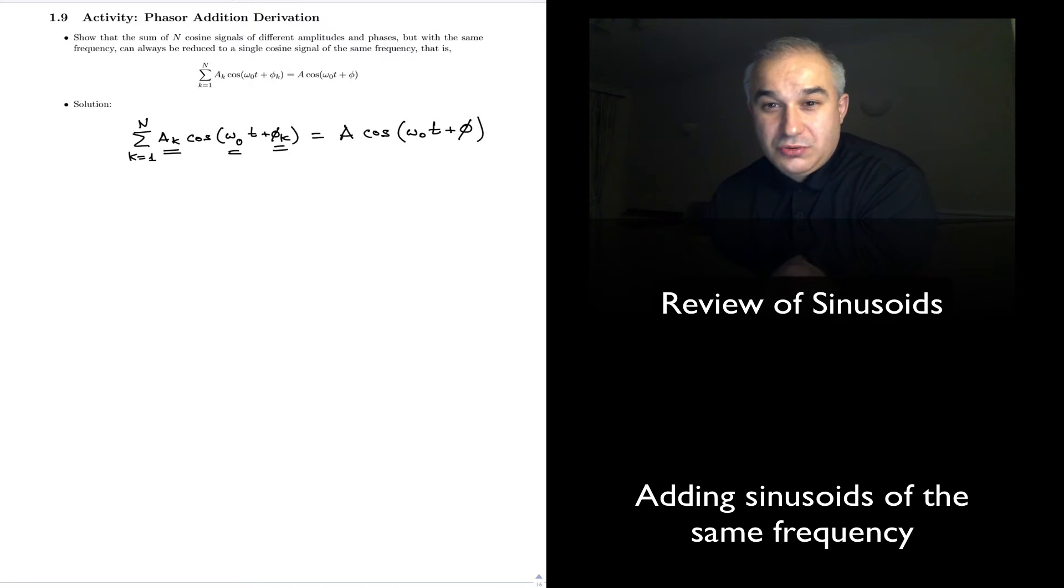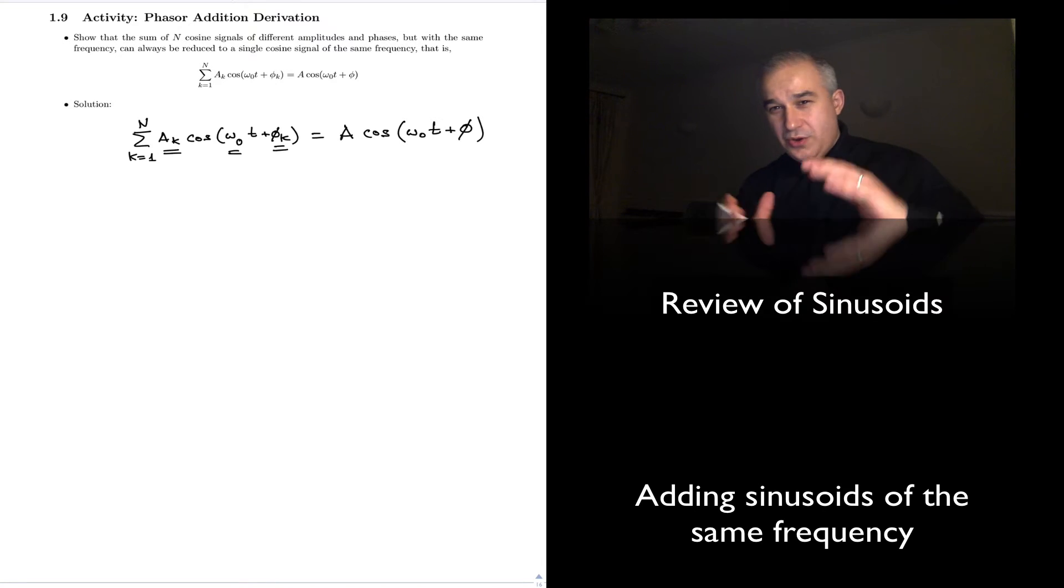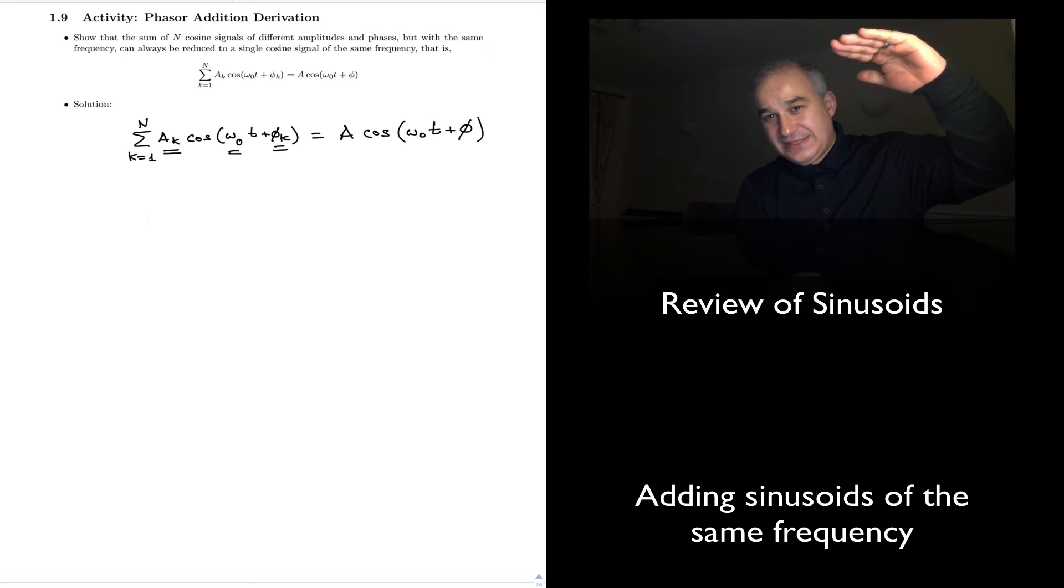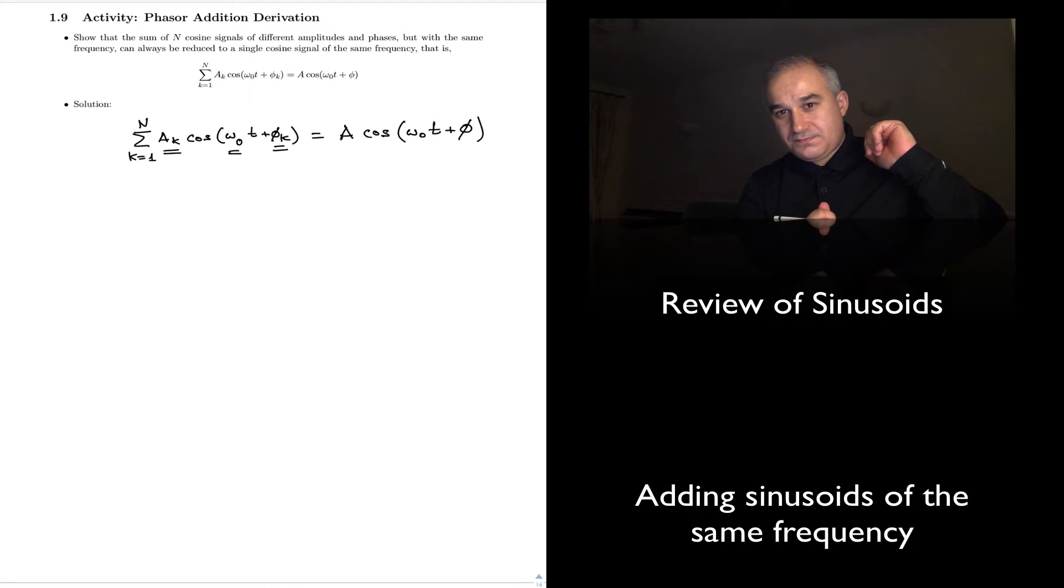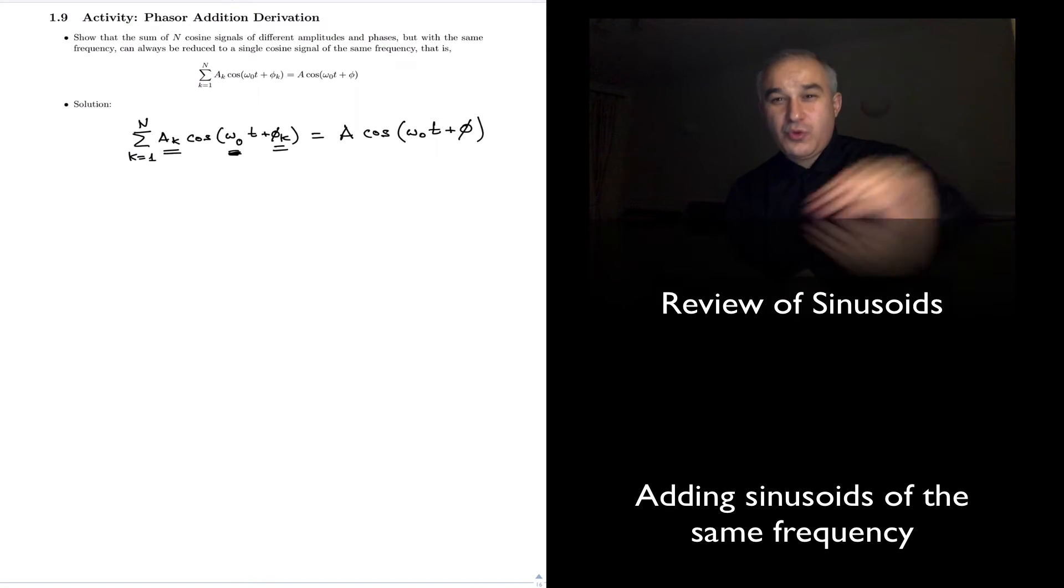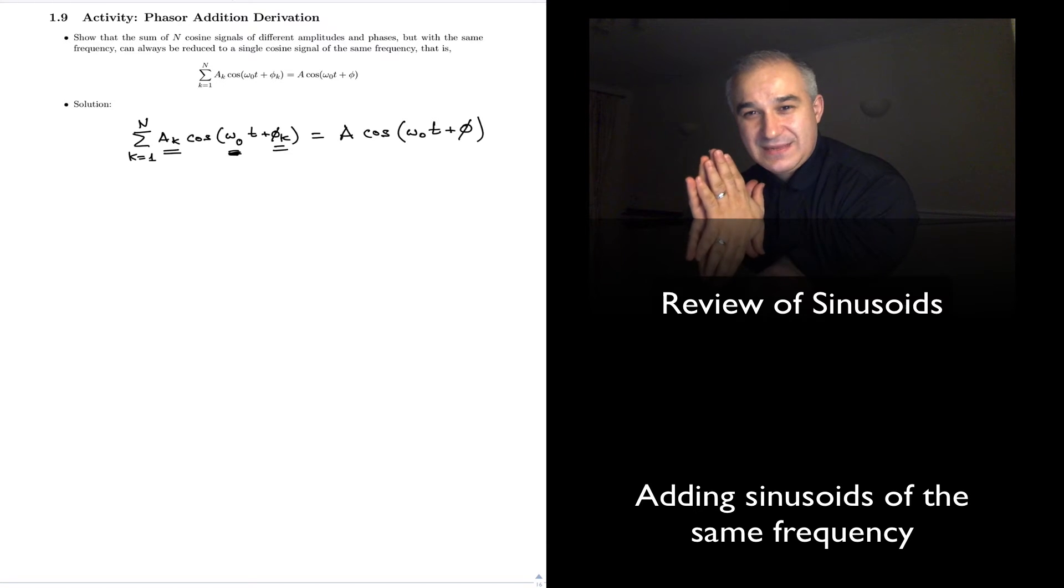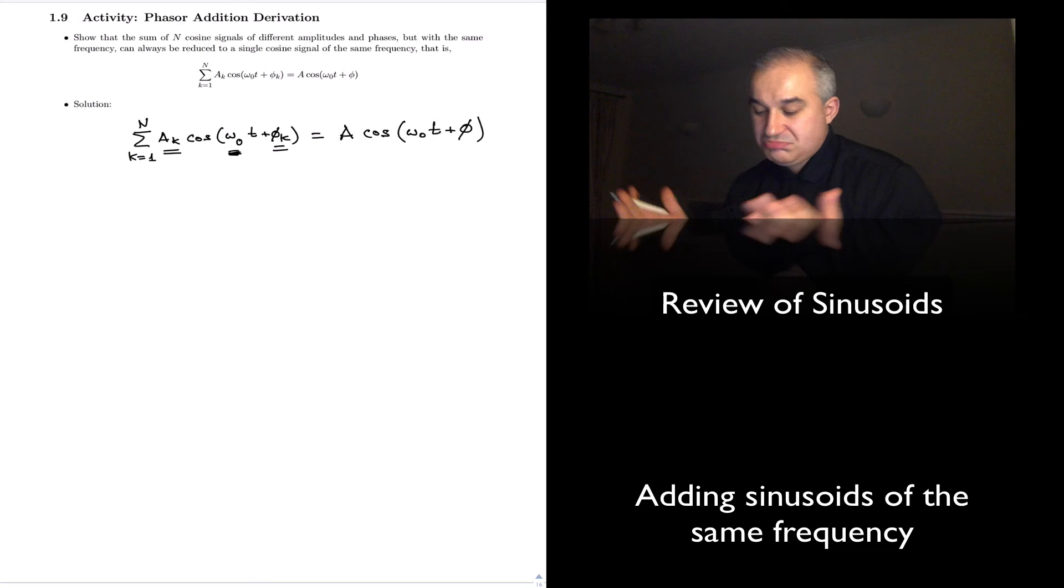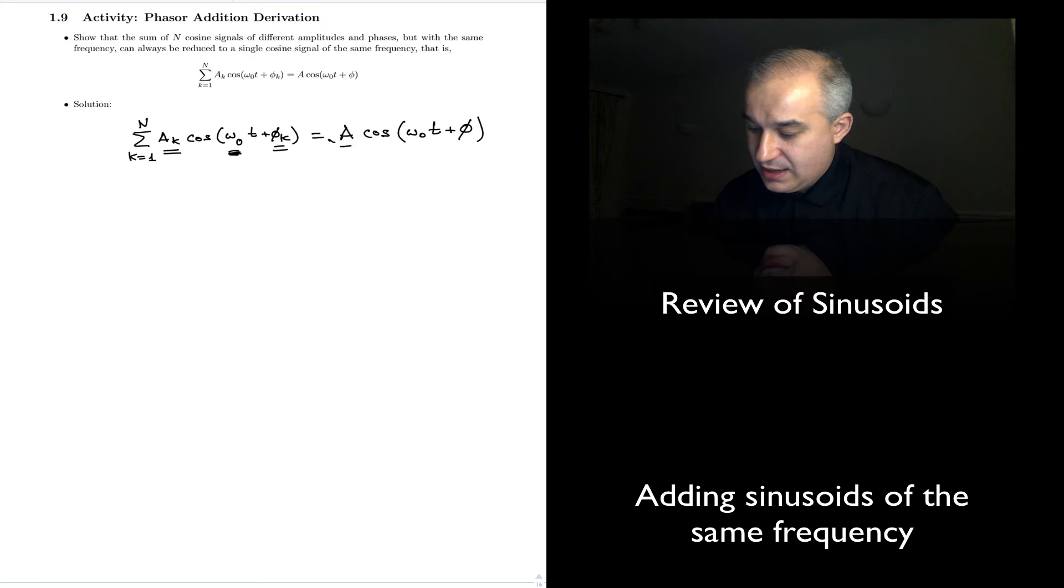And then, of course, it's going to have a particular phase. So, you add a hundred signals. But they are sinusoidal. And all of them have the same frequency. What do you get at the output? A simple sinusoid, of the same frequency, with a particular amplitude and a particular phase.